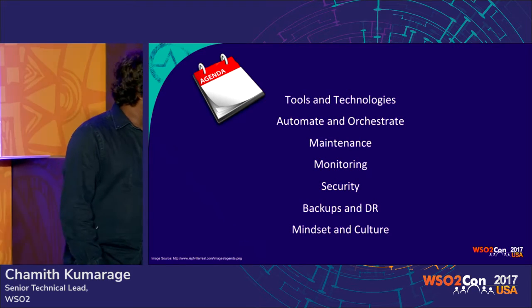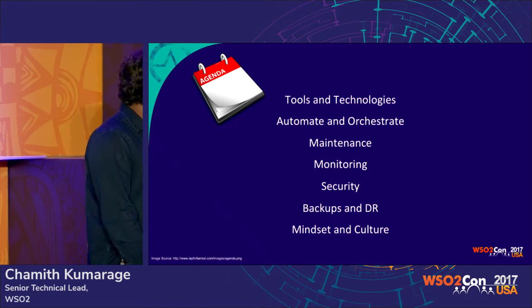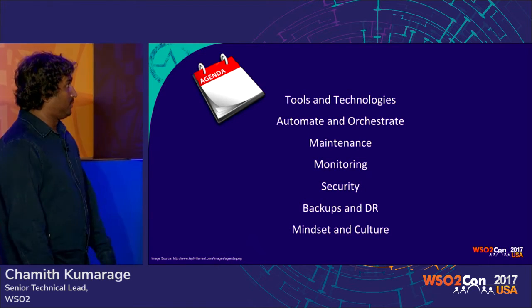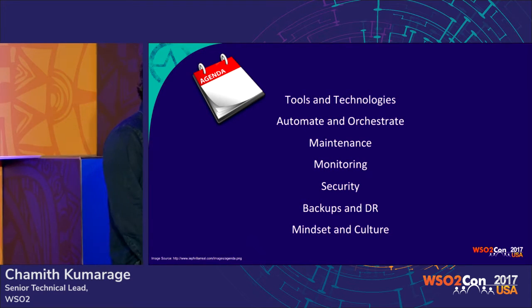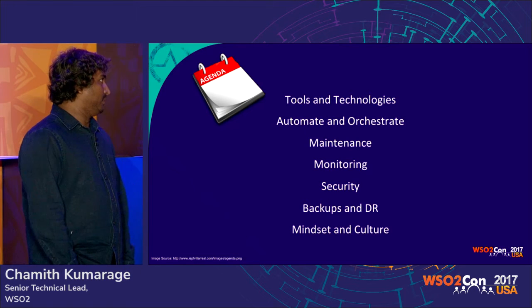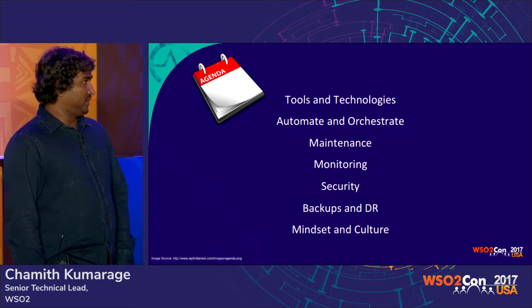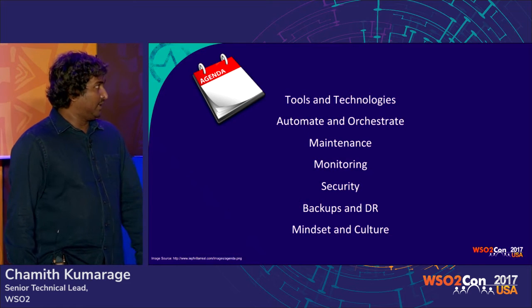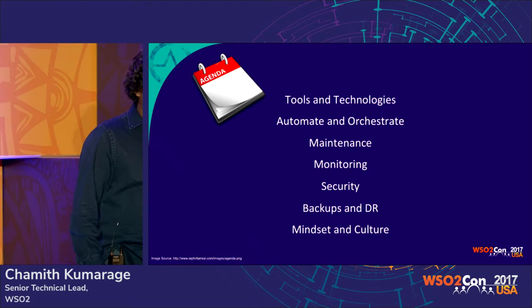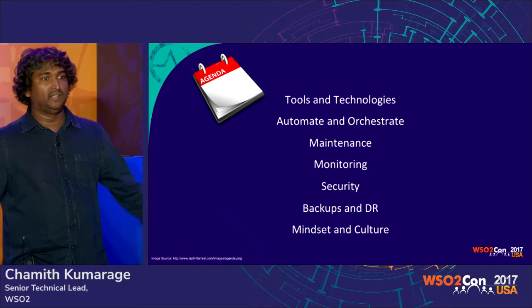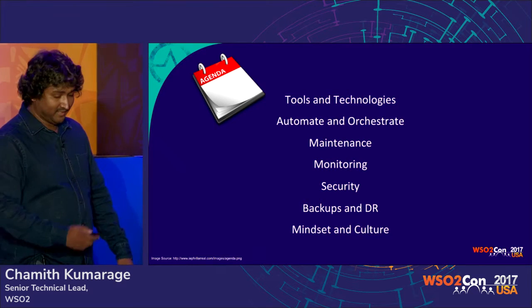So these are the seven areas I'm going to talk about: tools and technologies — how to pick tools and what things you need to consider when selecting technologies — automation, orchestration, maintenance, monitoring, security, backups, DR, and finally, the right mindset and culture that you can have within your teams and organizations.